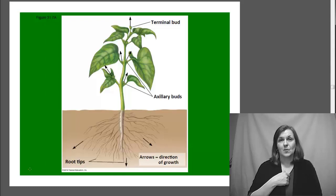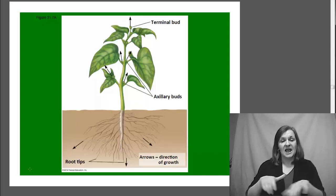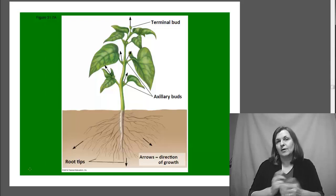Plants are categorized not so much on how they grow. They all have some form of indeterminate growth. But they're categorized instead based on how long they live.